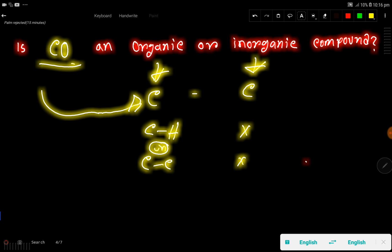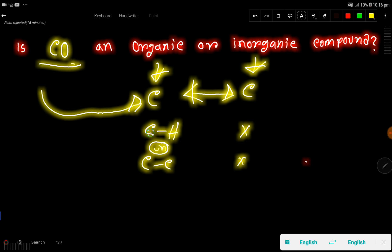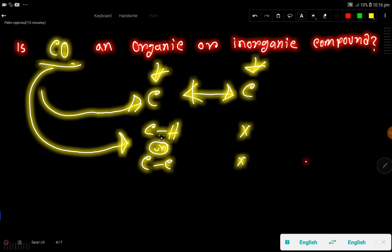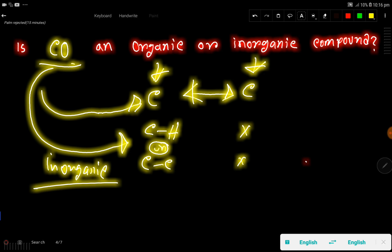Now, look at carbon monoxide — it has carbon, so it may seem organic or inorganic, as both types of compounds can contain carbon. But here we have a carbon-oxygen bond. To be organic, it needs a carbon-hydrogen bond or a carbon-carbon bond. Since carbon monoxide has neither, it is inorganic.